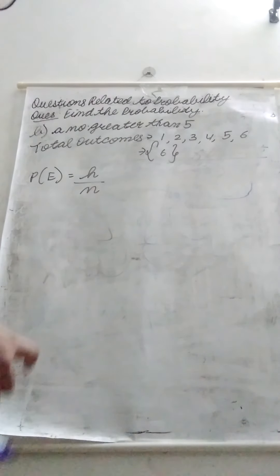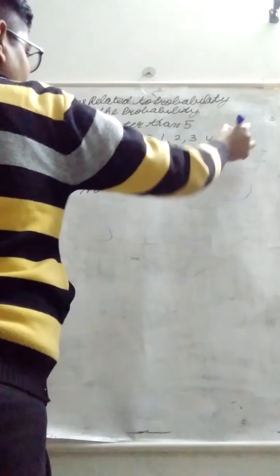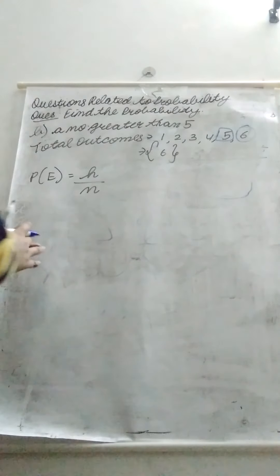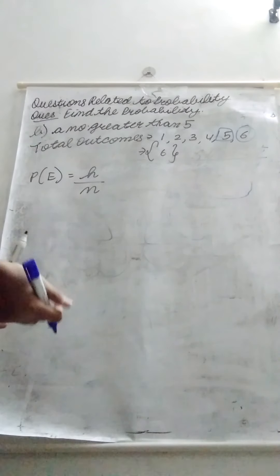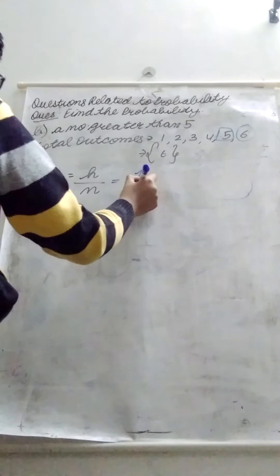Moving to the next part. The next question is a number greater than five. What is the number greater than five? Five. Greater number is six. One number. What is happening of the event? One. And total number of outcome is six.